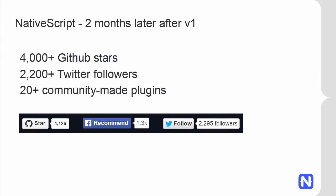This is the second month after we released the first public V1 of NativeScript and the team is excited to see how many people are attracted by NativeScript. There are more than 4,000 people on GitHub and more than 2,300 people follow the project on Twitter. Today there are more than 20 plugins created by the community, all available on npmjs.org by searching for NativeScript.